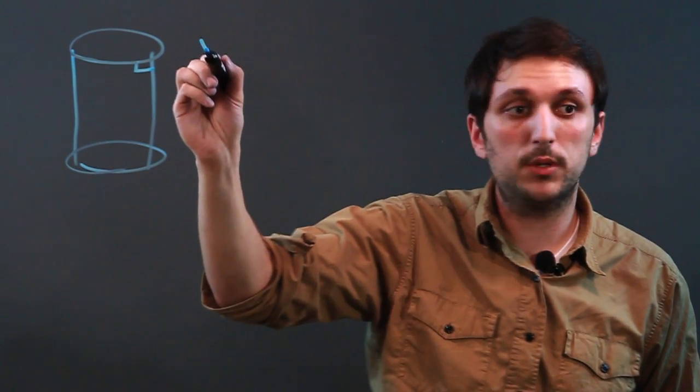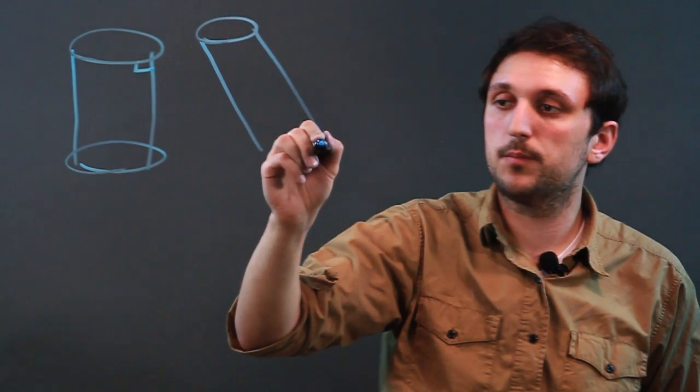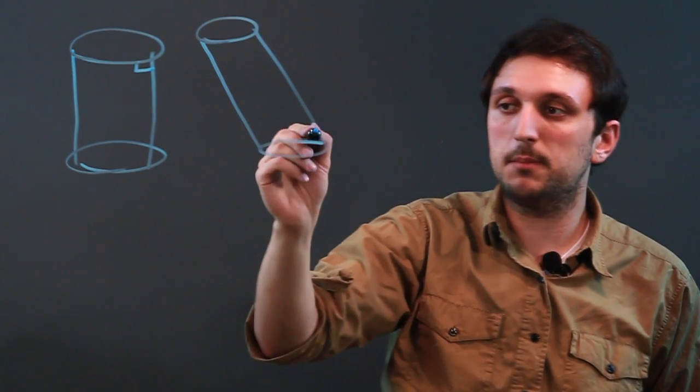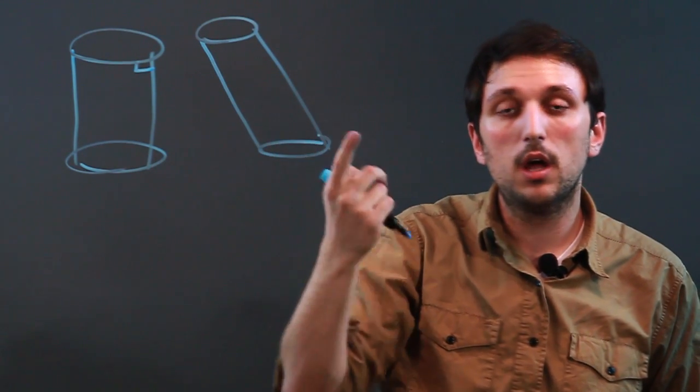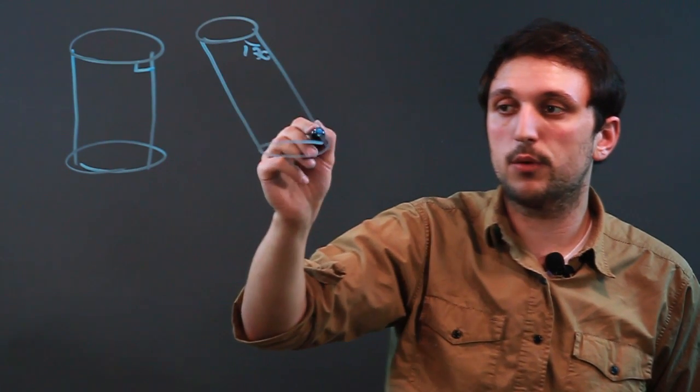Now we can have an oblique cylinder, for example, like this. In this case, the circular bases do not meet the height at a 90 degree angle. They can meet it here, it looks like it's about 130 and thus here it would be like 50.